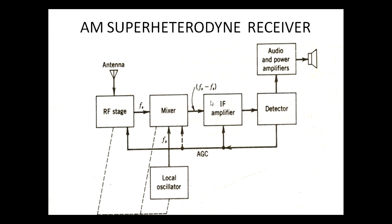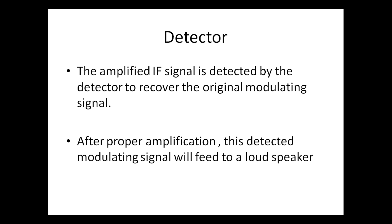The next stage of our superheterodyne receiver is the IF amplifier, which amplifies the IF signal or intermediate frequency signal. This intermediate frequency signal actually consists of our carrier signal and the modulating signal or information signal. The next stage is the detector stage. The amplified IF signal is detected by the detector to recover the original modulating signal. In the detector, the extraction process takes place — that is, the information signal is extracted from the modulated signal. After proper amplification, this information signal is fed to a loudspeaker.